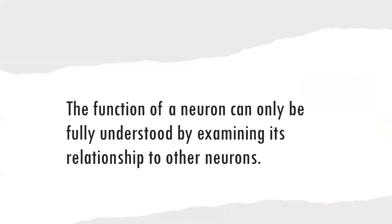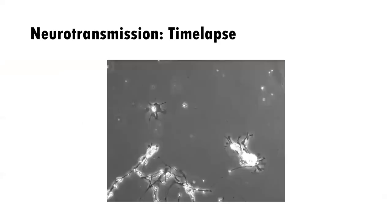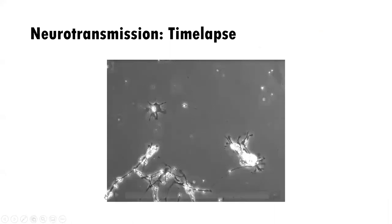Now that we've learned about neurons and glia in isolation, we need to understand how they work together, because the function of a neuron can only be fully understood by examining its relationship to other neurons — just like with brain regions. I'm going to share a time-lapse of neurotransmission. We'll share it twice: the first time just watch what's happening, and the second time I'll talk through it.